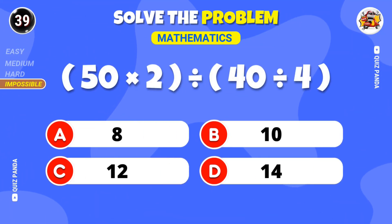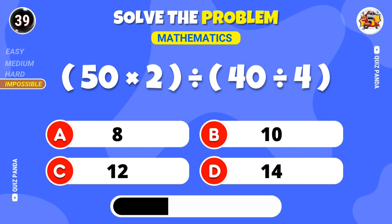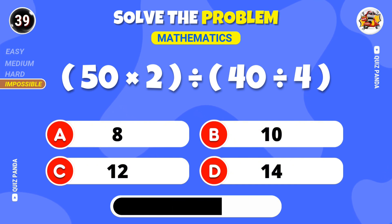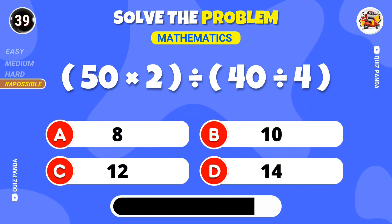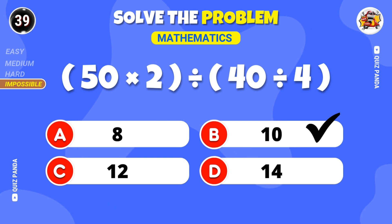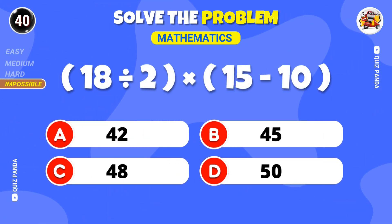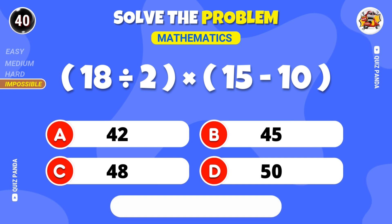What's the answer to 50 times 2 divided by 40 divided by 4? What's 18 divided by 2 times 15 minus 10?